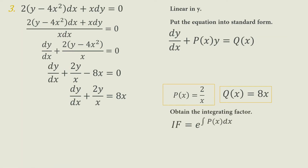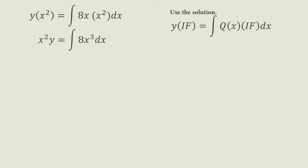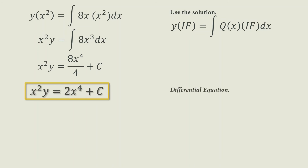Next, we obtain the integrating factor: e raised to the integral of 2/X DX. That results in 2 ln(X), raising to the exponent gives ln(X²), so our IF is X². Using the solution for linear in Y: Y times X² equals the integral of 8X times X² DX, which simplifies to 8X³. Integrating gives 8X⁴/4 plus C, which simplifies to 2X⁴ plus C equals 2X²Y.